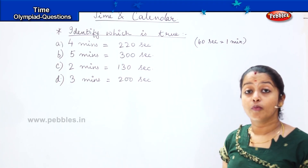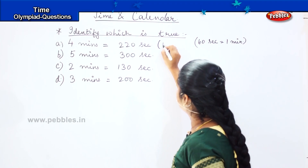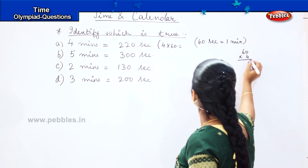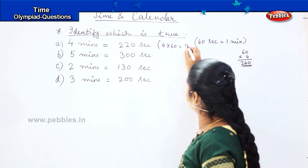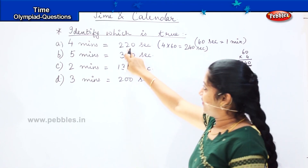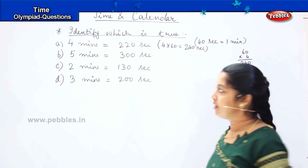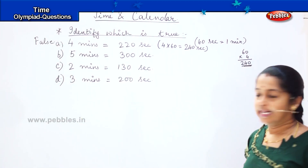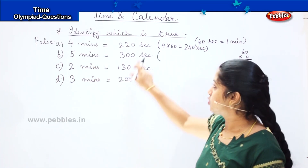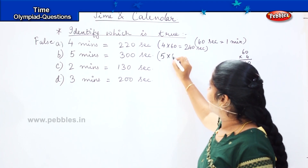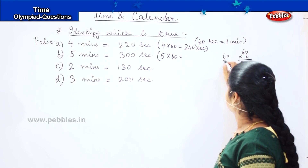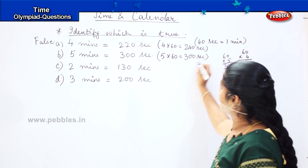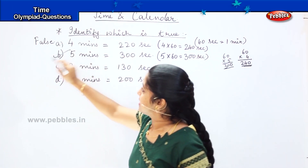For option A, 4 minutes: multiply 4 into 60. So 60 into 4 — 6 fours are 24 — so it should be 240. But they have given 220, so this is a false statement. For option B, 5 minutes: multiply 5 by 60. So 60 into 5 — 6 fives are 30 — so we get 300 seconds. The answer matches, so this is a true statement.